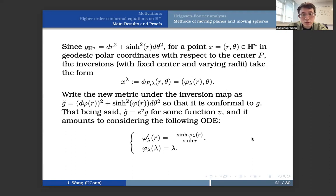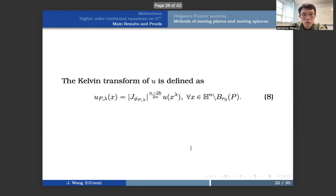And we write a new metric under the inversion map as this G tilde, so that it's going to be equal to d phi squared plus sinh phi squared d theta squared. And it has to be a conformal metric to the original G. That being said, G tilde is equal to e to v g for some function v. And it amounts to considering the following ODE: phi of r prime equals minus sinh phi of r divided by sinh r with an initial condition. And by solving this ODE,